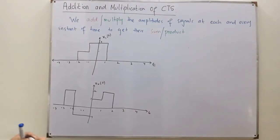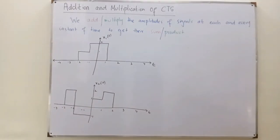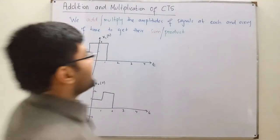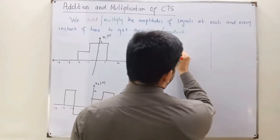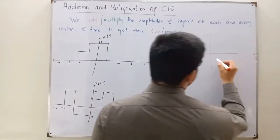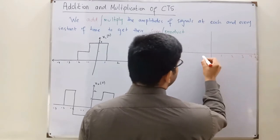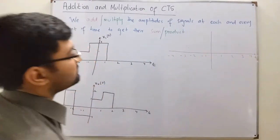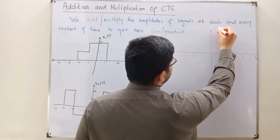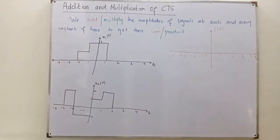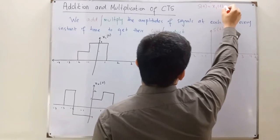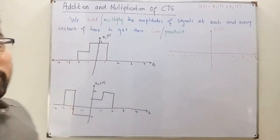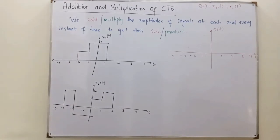So these are the two signals taken for demonstration of the sum and product. We do this at each and every instant of time. So S(t) equals x1(t) plus x2(t) at each and every instant of t. We take different intervals of time and compute accordingly.